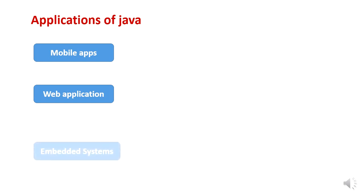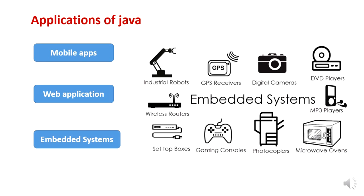The third application is embedded systems. What are embedded systems? These are systems with a dedicated function — they are not reprogrammable. In the image you can see washing machines, microwaves, MP3 players, set-top boxes. These consumer electronic devices do a dedicated job, hence they are called embedded systems. Java also finds use in programming embedded systems. There are many more applications of Java beyond these three.